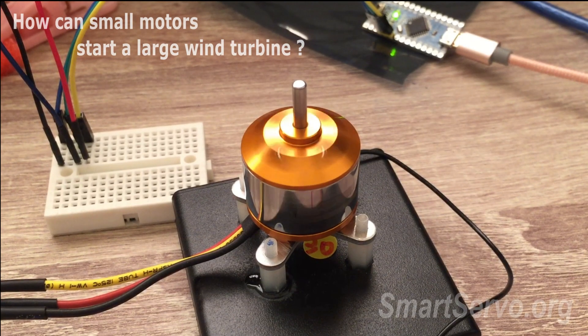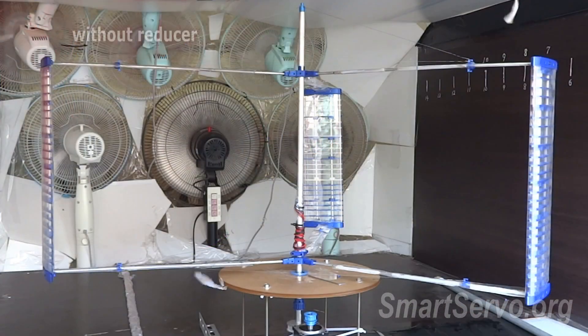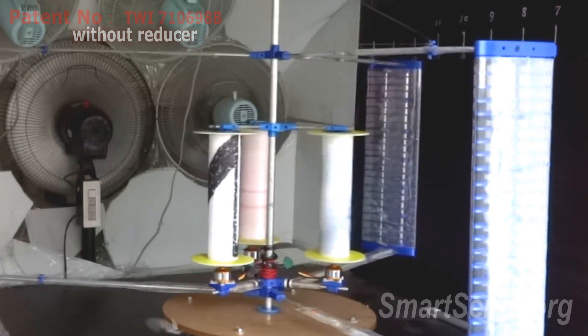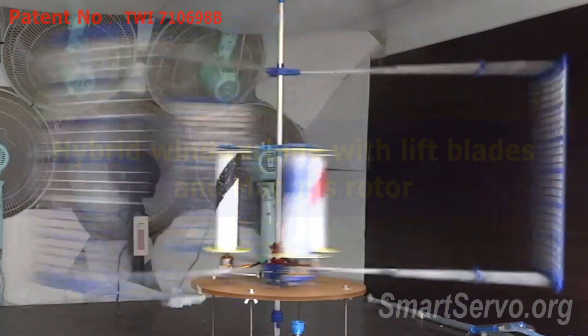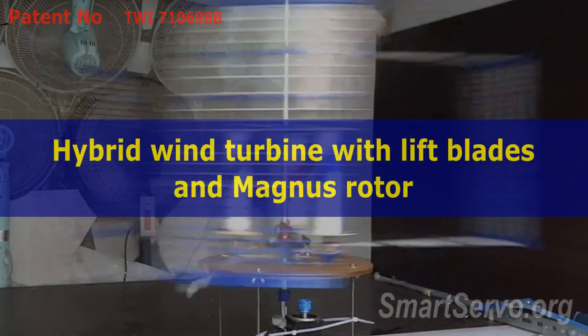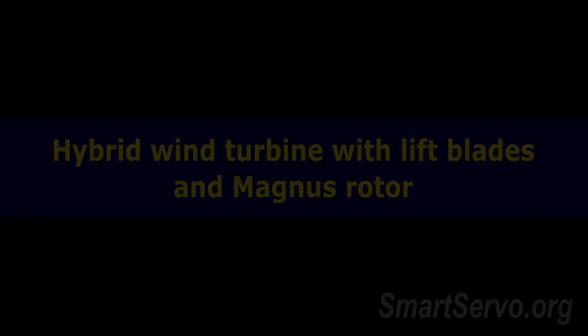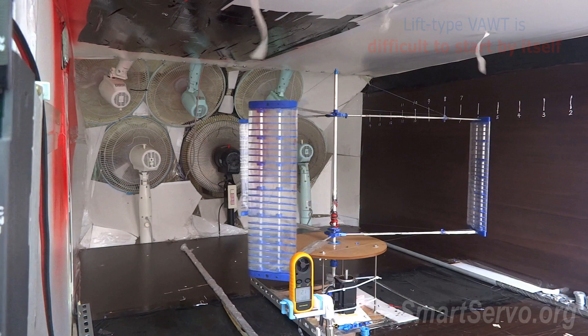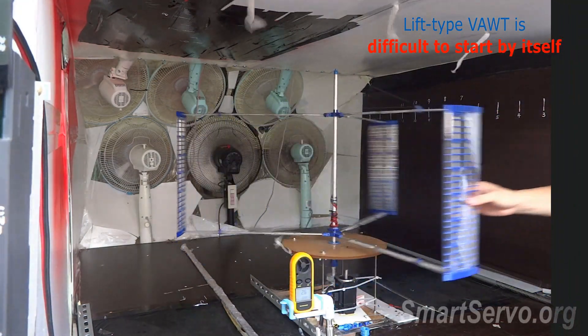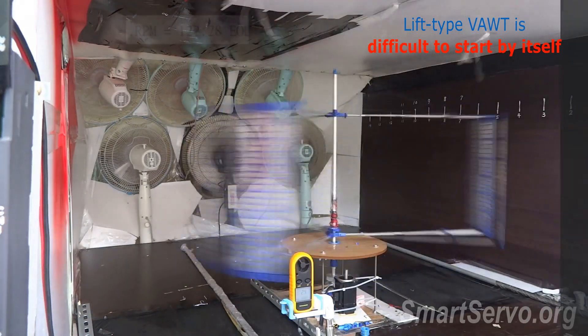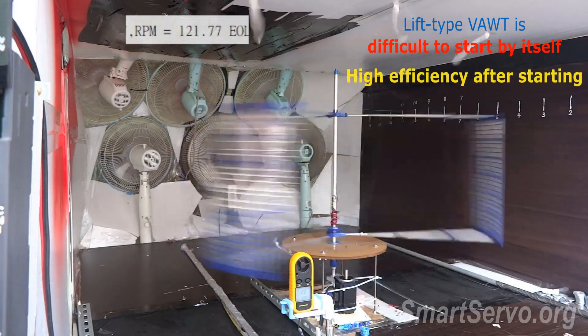How can small motors start a large wind turbine without a reducer? The lift-type vertical axis wind turbine is difficult to start by itself, but it can achieve high efficiency after assisted starting.